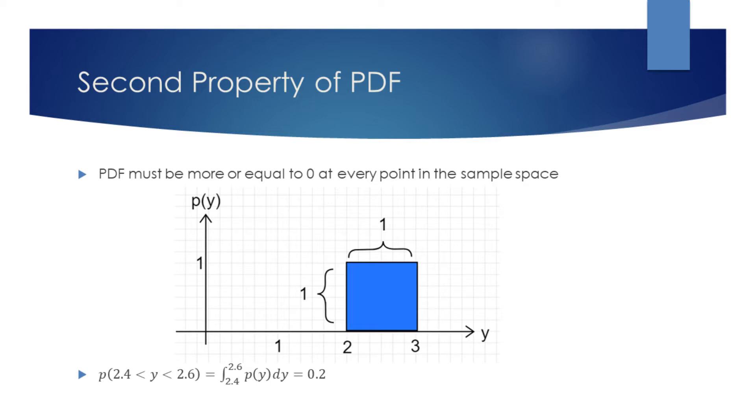For example, let's find the probability of our task finishing within the interval from 2.4 to 2.6 minutes. Since the integral is the same as the area under the curve, we can solve this problem by inspection. 2.6 minus 2.4 is 0.2. This is our width. From the graph we can see that the height is 1. Multiplying width and height, we find that the probability of the task finishing within the interval from 2.4 to 2.6 minutes is 0.2.